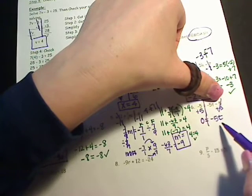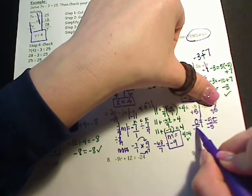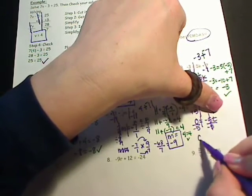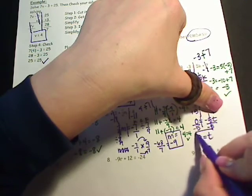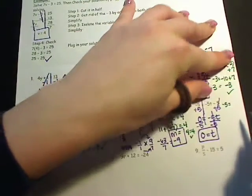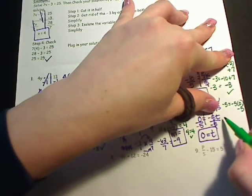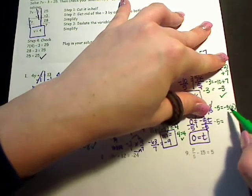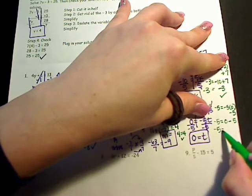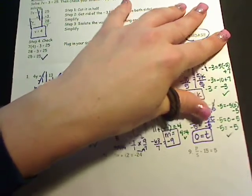Cut it in half, isolate the variable. Opposite of multiplying by negative 5 is dividing. What I do to one side, I'm going to do to the other. My negative 5's cancel. 0 divided by negative 5 is 0. So t equals 0. Let's plug it back in. Negative 5 equals negative 5 times 0 minus 5. Negative 5 times 0 is 0 minus 5. If I have 0 and I take away 5, I'm at negative 5. So negative 5 equals negative 5. Check.